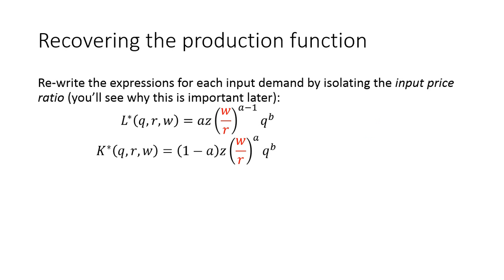Then I can go ahead and I can take the partial derivative with respect to r, and I can get the capital input demand. With a little bit of algebra, I can again isolate this price ratio.